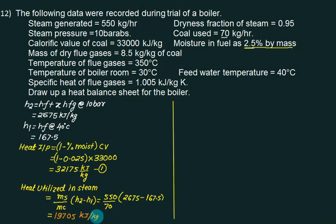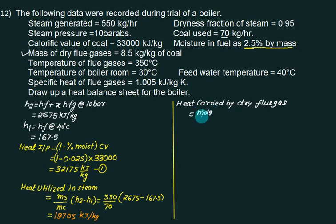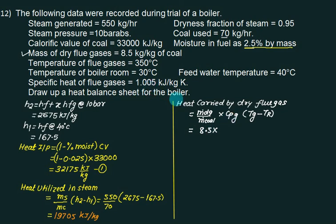Next, heat carried by dry flue gas: the mass of dry flue gas is given as 8.5 kg per kg of coal. Heat equals (m_dot_dg / m_dot_coal) × Cp_dry_gas × (T_flue_gas − T_room), which is 8.5 × 1.005 × (350 − 30) kJ/kg of coal.